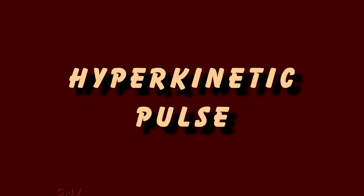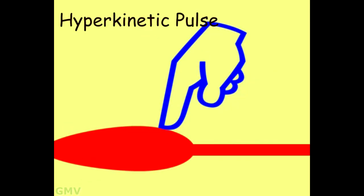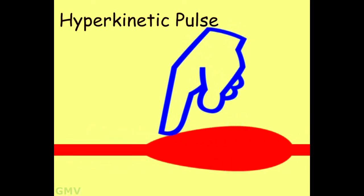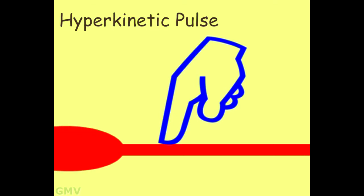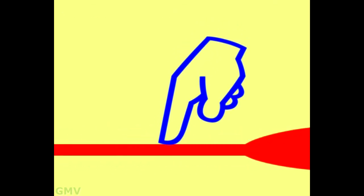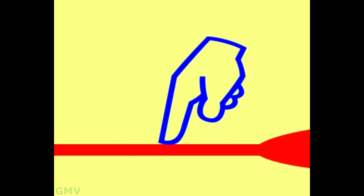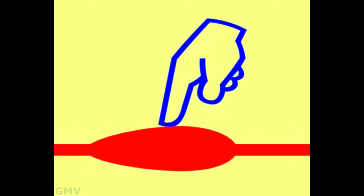Hyperkinetic or bounding or high volume pulse occurs due to high pulse pressure, which may be due to increased stroke volume as in aortic regurgitation or after exercise, or due to low peripheral resistance as in fever, severe anemia, thyrotoxicosis or cirrhosis. Note the high amplitude of the pulse, raising the finger more than normal. This is hyperkinetic or bounding pulse.